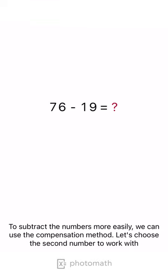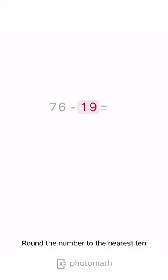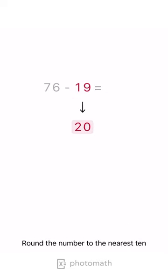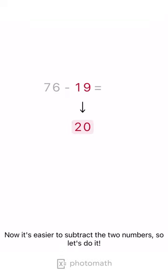To subtract the numbers more easily, we can use the compensation method. Let's choose the second number to work with. Round the number to the nearest 10. Now it's easier to subtract the two numbers, so let's do it.